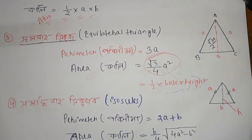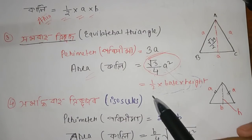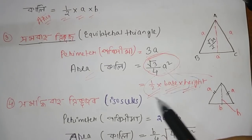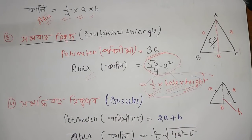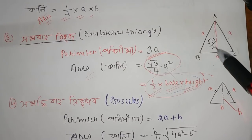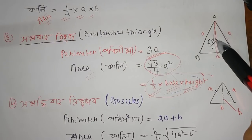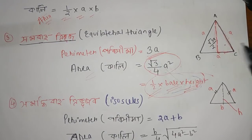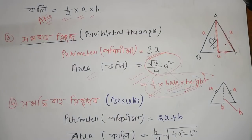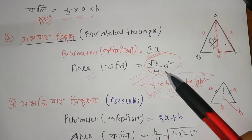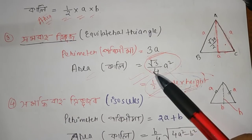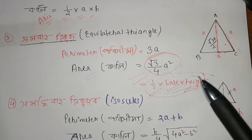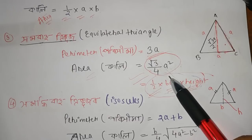The formula is: half into base into height, half into bhoomi into noti. Because the triangle is a right angle triangle, using Pythagorean theorem: hypotenuse square equals bhoomi square plus lombo square. You should know the formula directly: area equals root 3 by 4 a squared. The concept is clear.